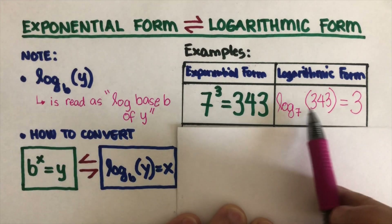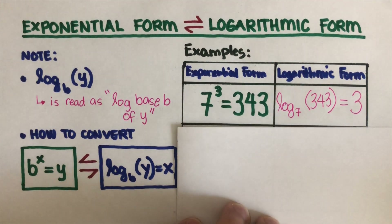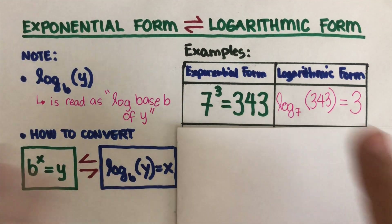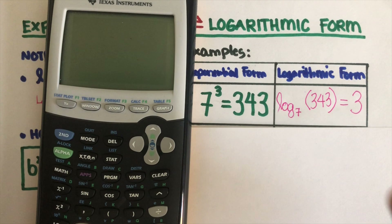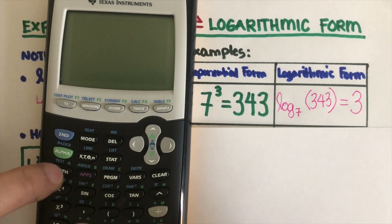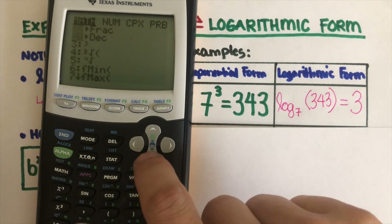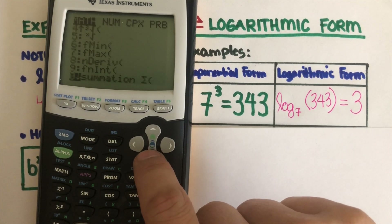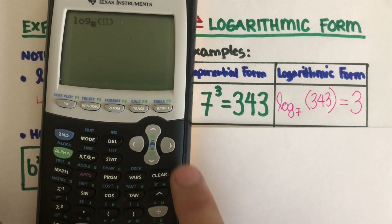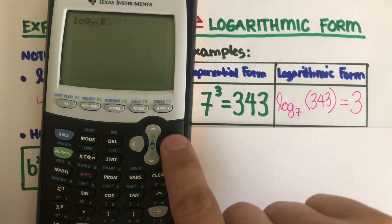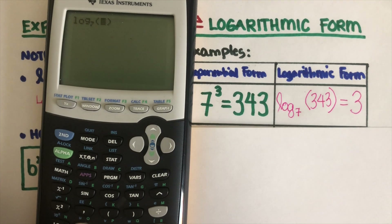That is the logarithmic version for this. Now, let's see if this logarithmic version is correct — I'm going to set it up on the calculator. Does it really equal 3? So, I have the base is 7 and inside the parentheses is 343. Let's see if that is equal to 3.